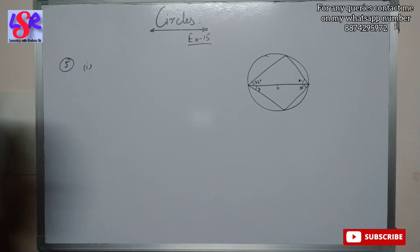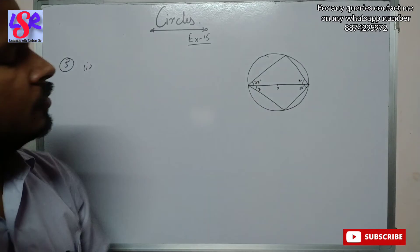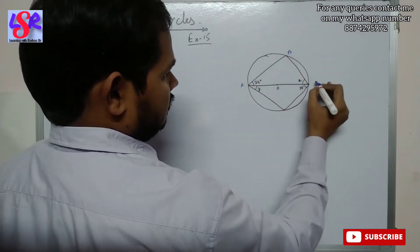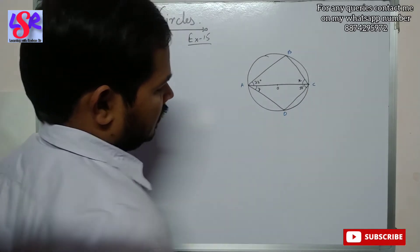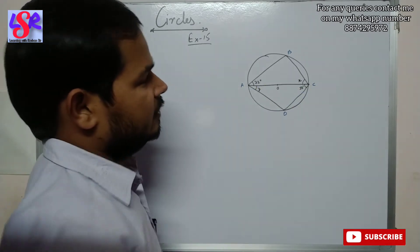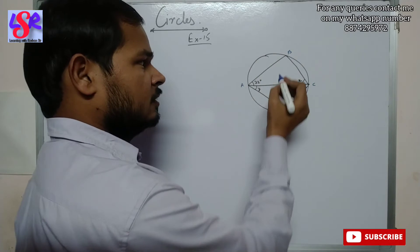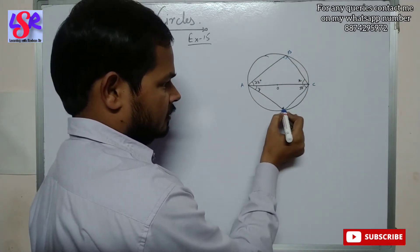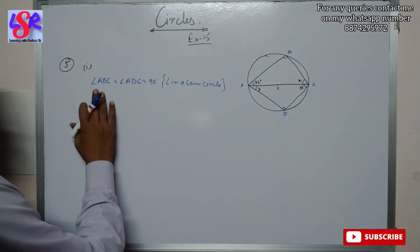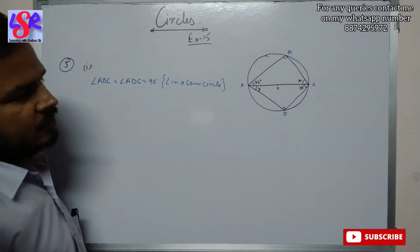In question number 5 first part, we have this figure in which we have to find the value of X and Y. We name the points A, B, C and D. Now O is the center of the circle, which means AC is the diameter. Therefore, angle ABC equals angle ADC equals 90 degrees, as angle in a semicircle.